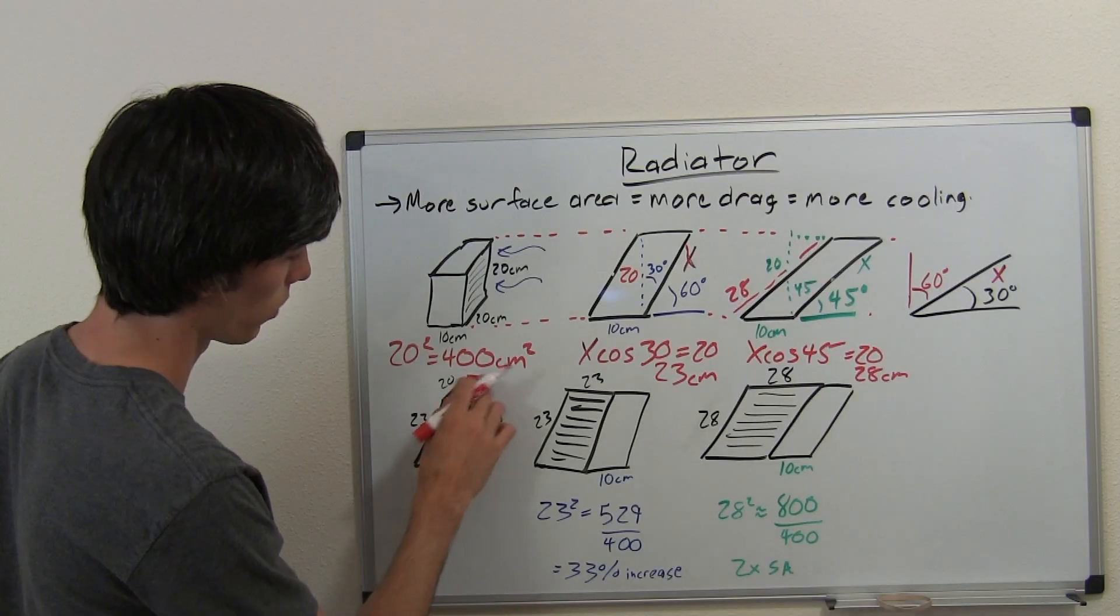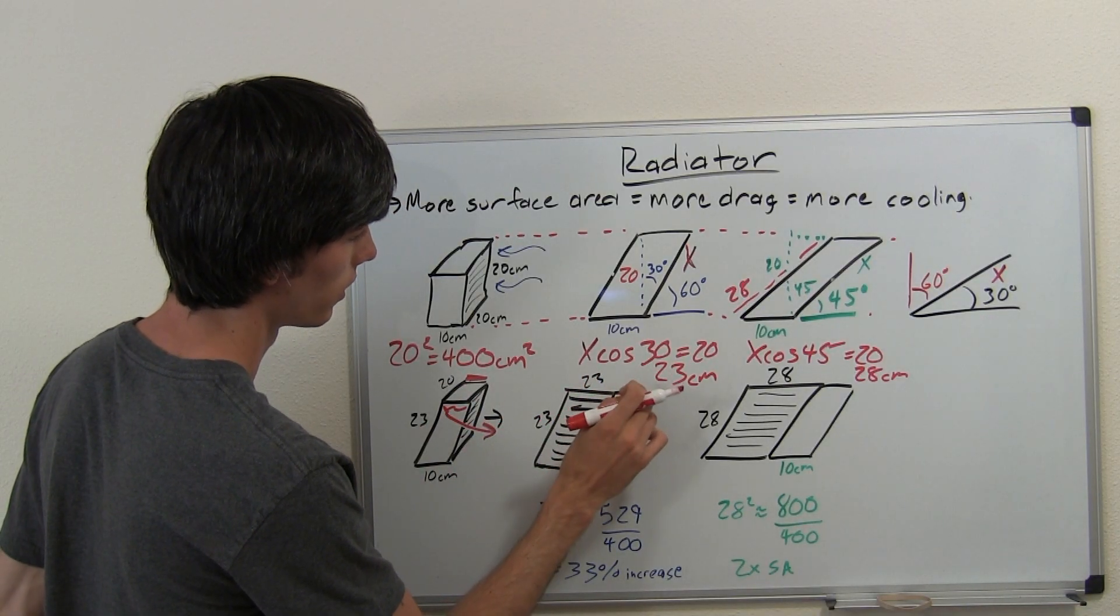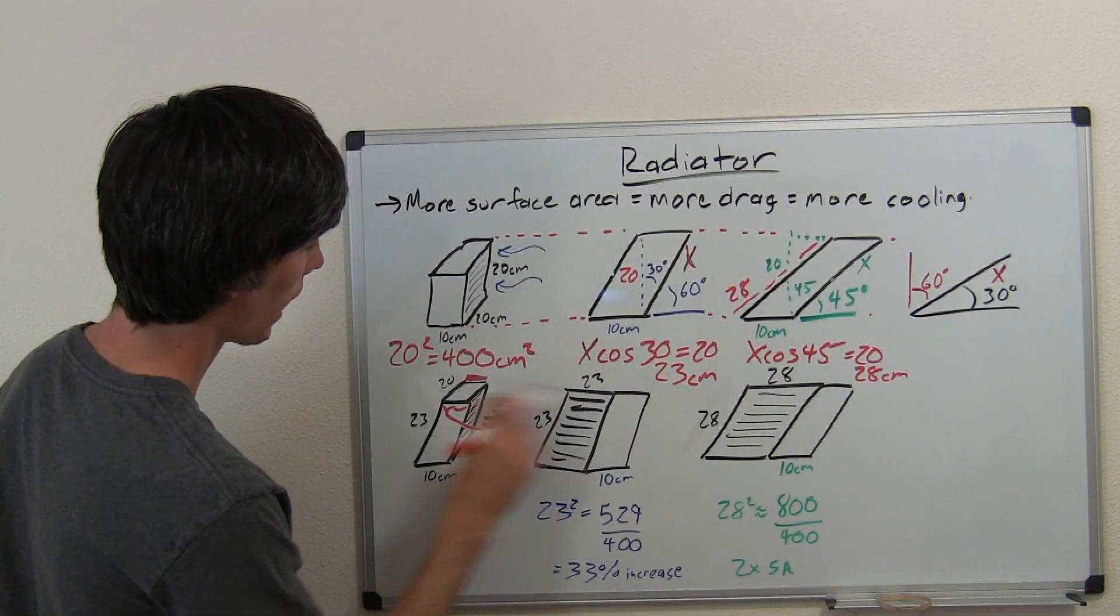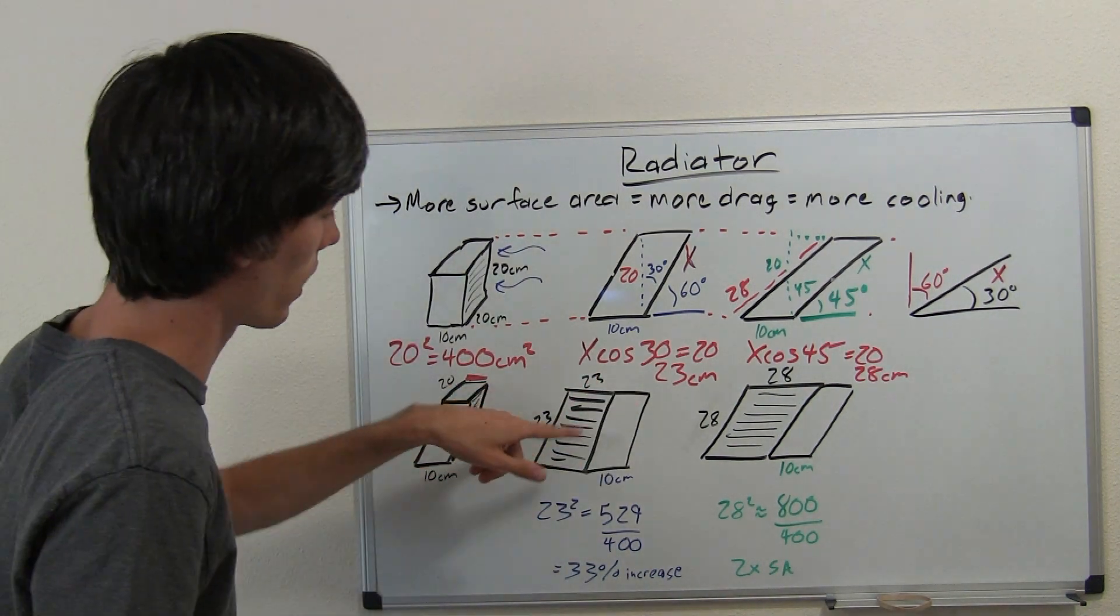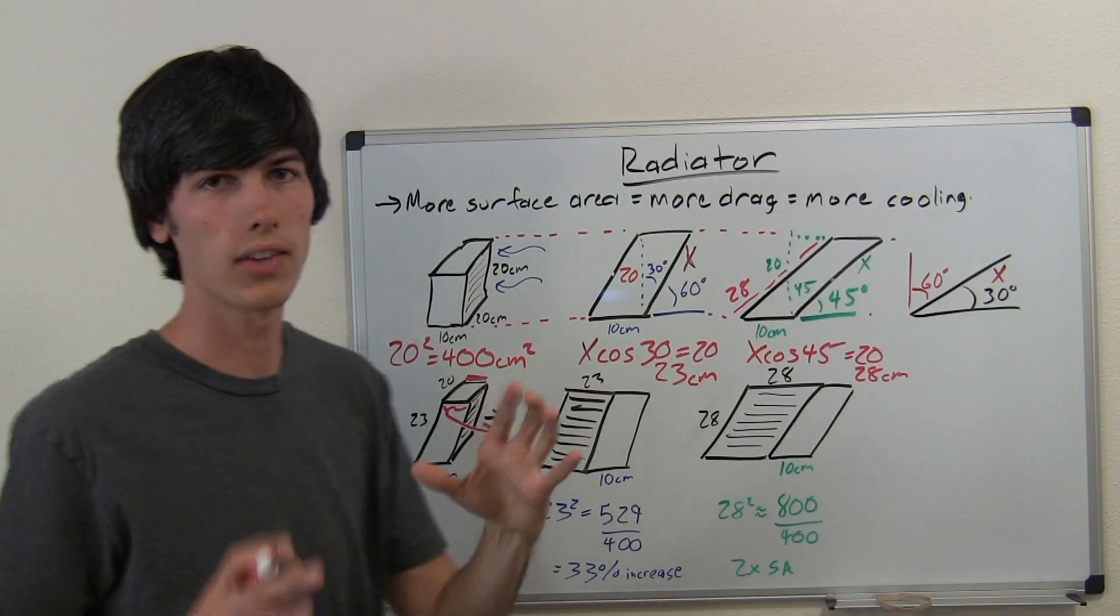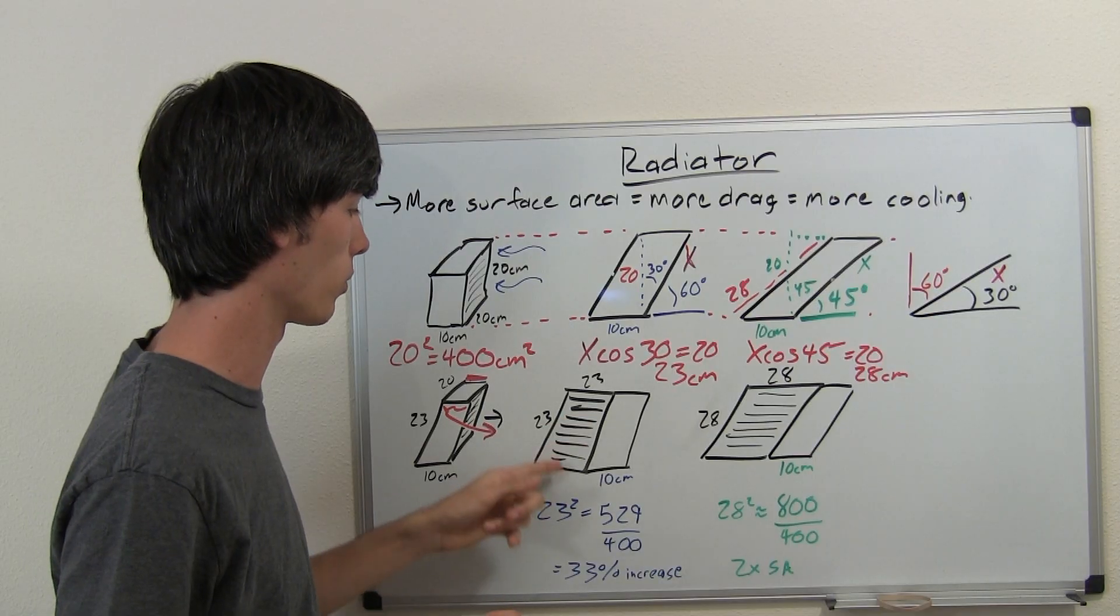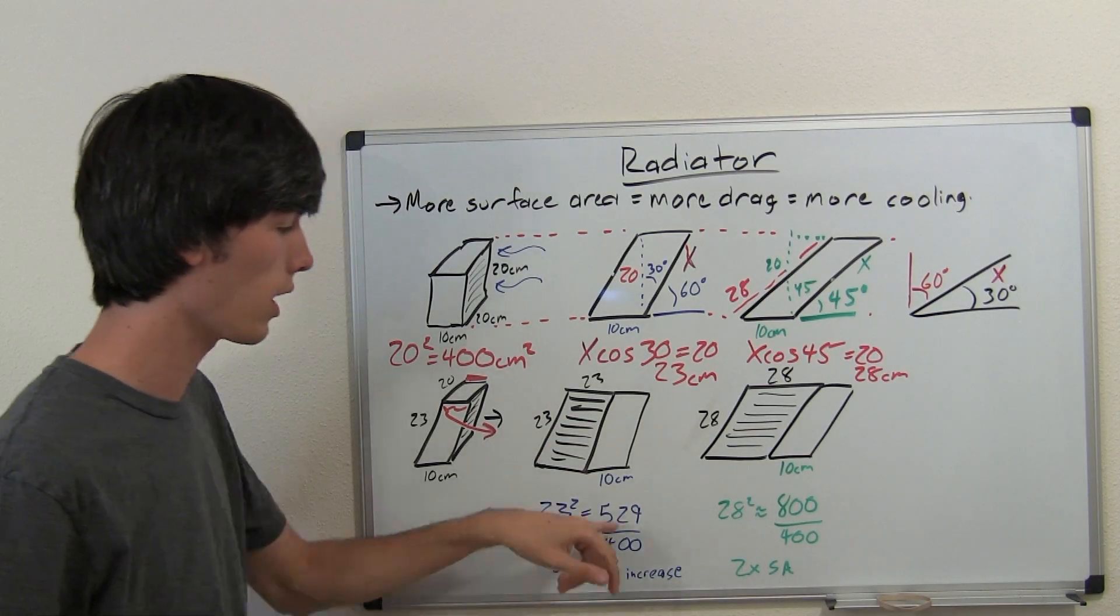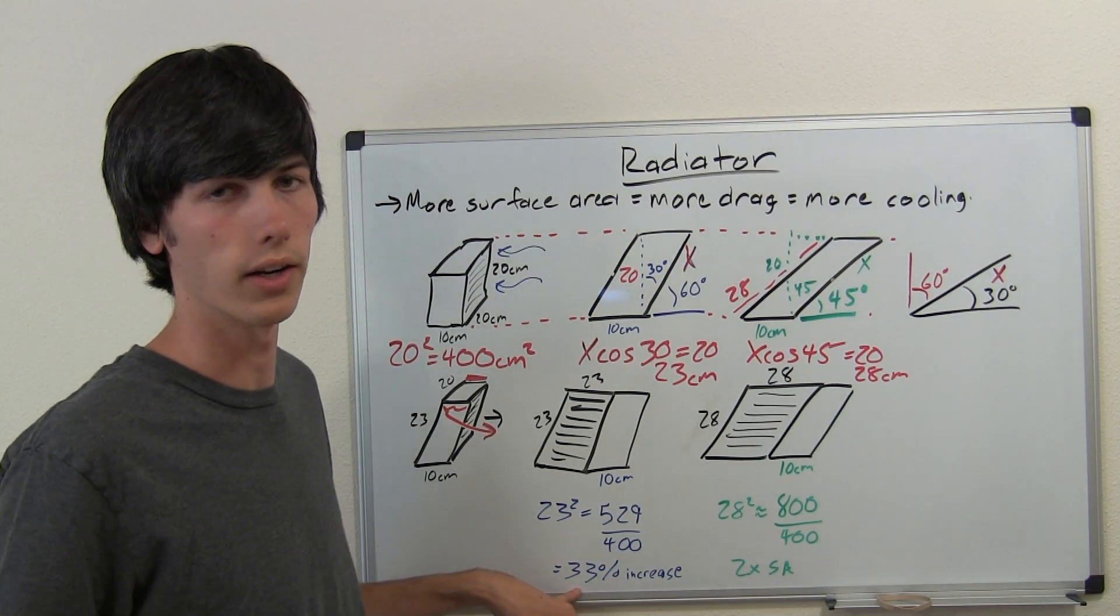So you do the same math with that length there. And you've got 23 cosine... Or no, I'm sorry. You've got x cosine 30 is equal to 20. And then you determine that top length to be 23. So now you've got 23 centimeters by 23 centimeters. With the same frontal surface area as you had originally. But now the surface area of the radiator is 23 squared. So 529 centimeters squared. A 33% increase in surface area. Without increasing your drag.